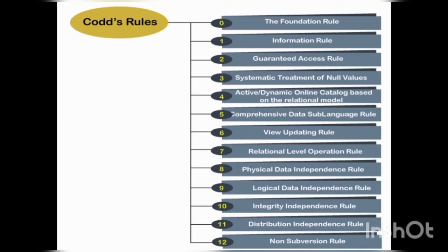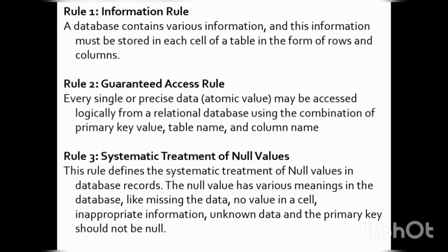So let's see the rules. These are Codd's rules — 12 rules plus a Rule 0, making 13 in total. The rules are: Foundation Rule, Information Rule, Guaranteed Access Rule, Systematic Treatment of Null Values, Active Dynamic Online Catalog, Comprehensive Data Sub-language Rule, View Updating Rule, Relational Level Operations Rule, Physical Data Independence Rule, Logical Data Independence Rule, Integrity Independence Rule, Distribution Independence Rule, and Non-Subversion Rule.